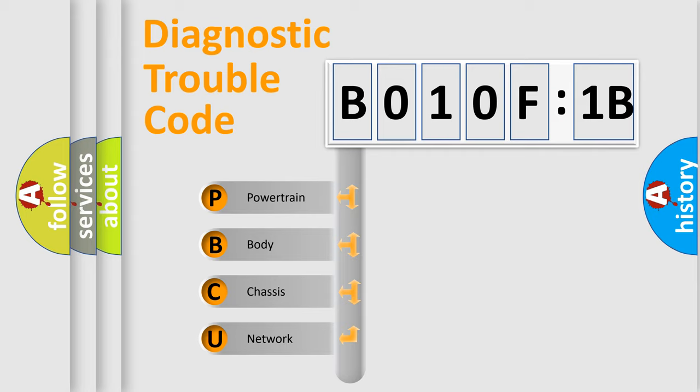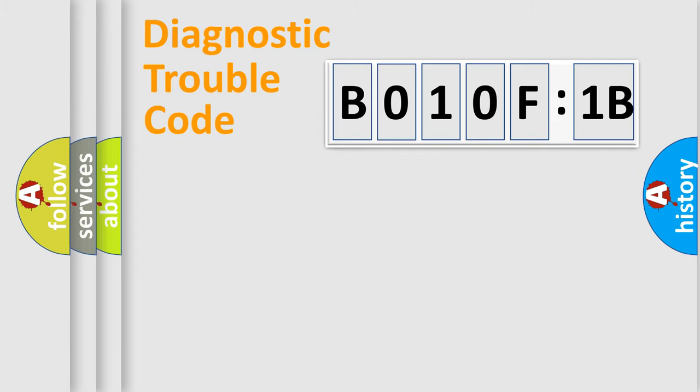We divide the electric system of automobile into four basic units: Powertrain, Body, Chassis, and Network.